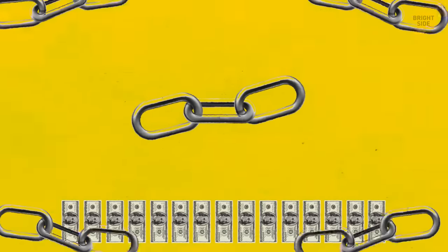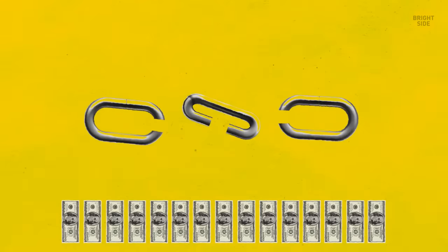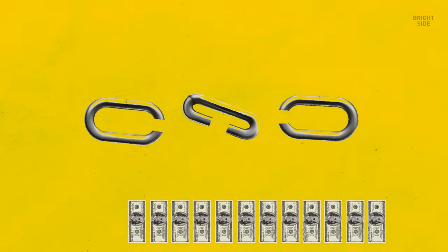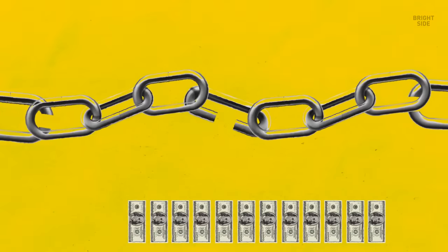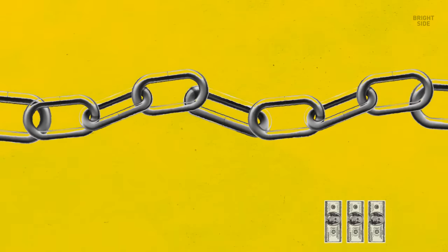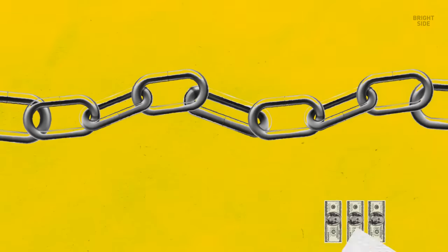First, take one piece of chain and break all of its three links open. It'll cost you $3. Then link the remaining four pieces of the chain with these open links. Welding these links will cost you another $9. In total, you'll pay only $12.